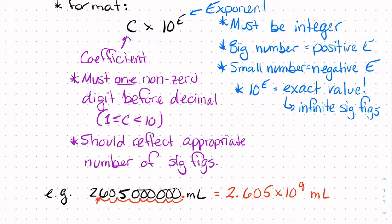This number would be equivalent to 2.605 times 10 to the 9th milliliters. This, I hope we can all agree, is a big number. Greater than 10 is going to have a positive exponent. Big number means our exponent is going to be positive. We're moving it 9 places, so that means our exponent is going to be positive 9.